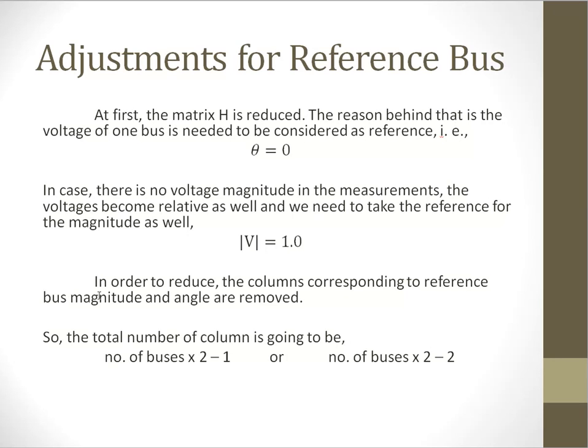So when there is any voltage magnitude in the system, the total number of states becomes 2n-1. And when there are no voltage magnitude measurements, then the total number of states become 2n-2. That's all for today, thanks for watching.